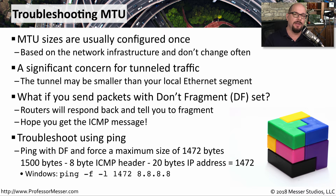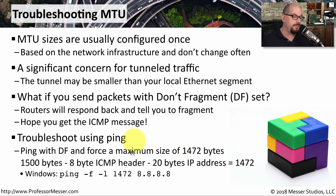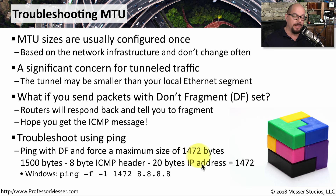But what is that particular value for the maximum transmission unit? One thing you can do is use the ping command to try to determine what a good size might be. You can start with the maximum size of an IP packet and then work down until you're able to ping a device on the other side of the network. You can send this ping command with a special option that turns on the don't fragment bit, and then set it to be the maximum size of 1,472 bytes — meaning you're using the entire 1,500 bytes, including the 8-byte ICMP header and the 20-byte IP header.